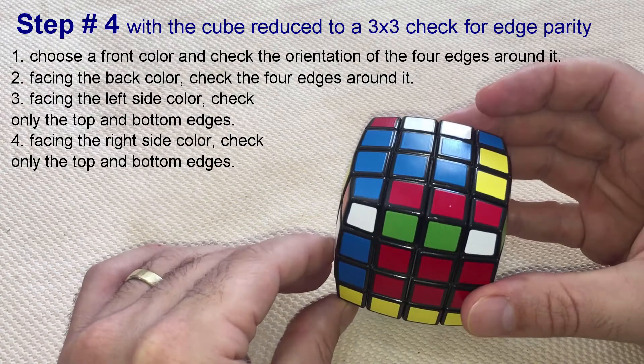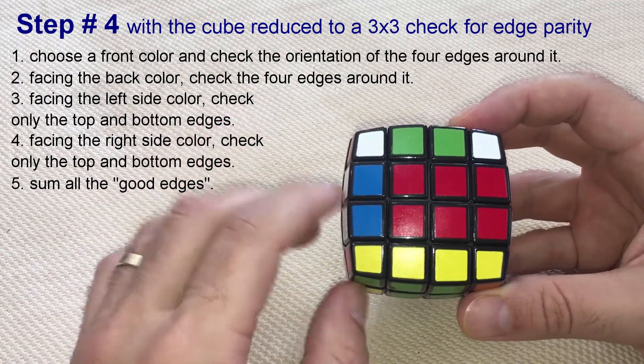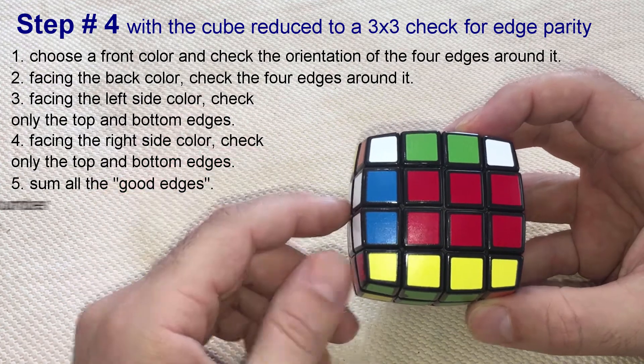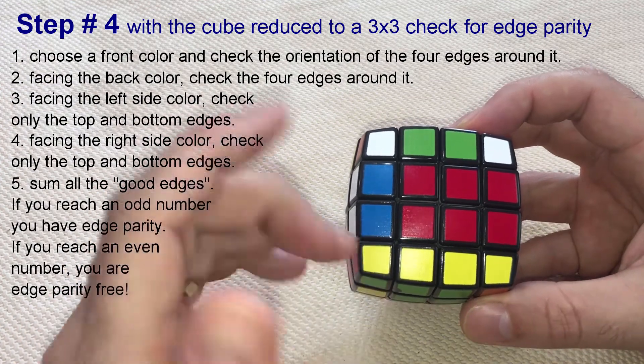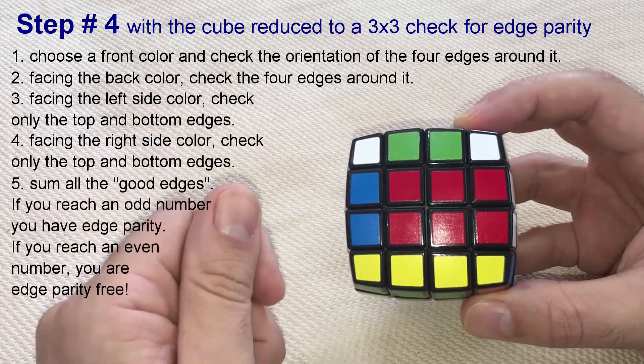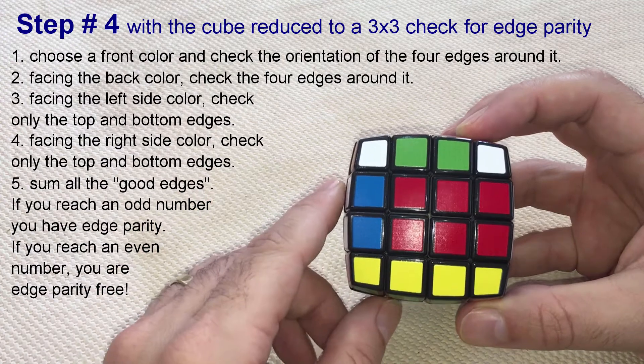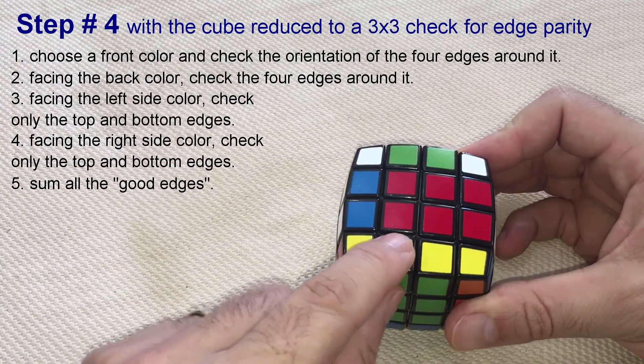They are both bad edges. So, we have counted a total of seven good edges, and seven is an odd number. And now we know that we have an edge parity error. Let's then move on to the next step and solve this edge parity.